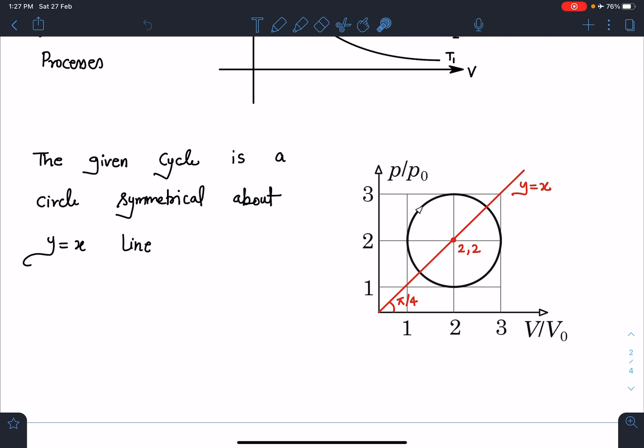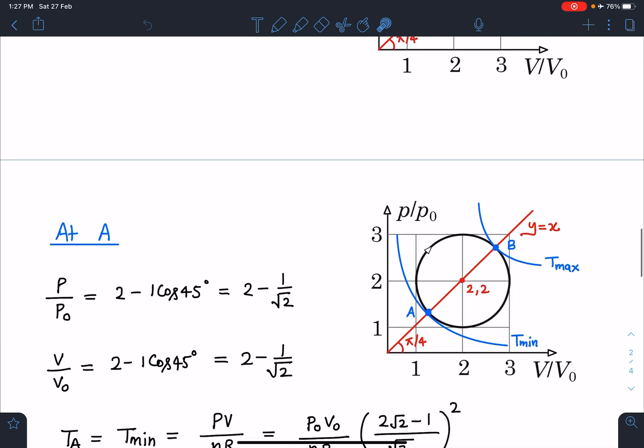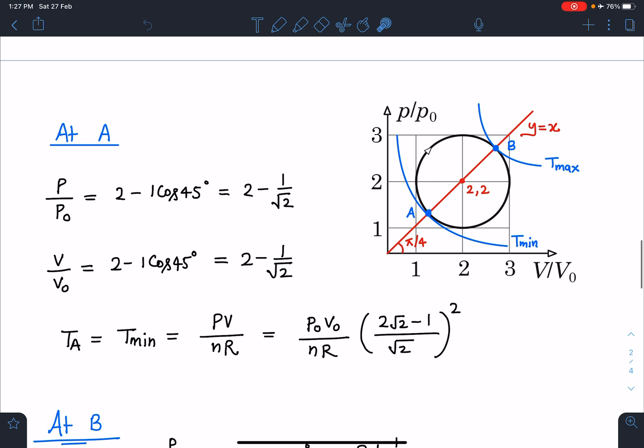If you see in the next diagram, this line is inclined at π/4 angle. You can see here I am taking two isotherms with T_min and with T_max, so they must intersect the circle at points A and B respectively.